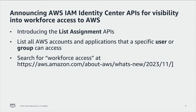Previously, you had to manually map user or group information with their AWS account details to build a complete view of which employees can access what AWS accounts and applications. Now you can use the APIs to get end-to-end visibility of the user or group, what accounts or applications they can access, and which permission sets enabled the access.